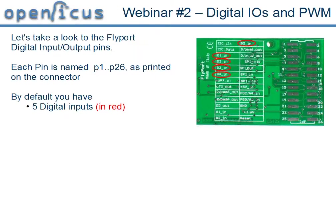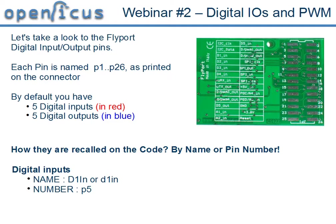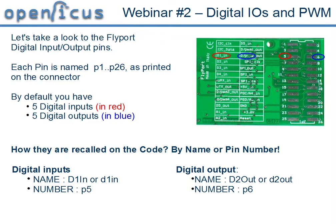Let's take a look at the Flyport pinout. Each pin is named with a number from 1 to 26 and with a name — for example D1in for the digital inputs, and D1out, D2out and so on for the digital outputs. We have a double choice: we can use the name, for example D1in, or the number — P5 is the same thing. For the digital output we can use for example D2out, which is the same as using P6.